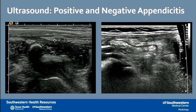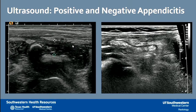Here are two examples of the appendix seen by ultrasound. The image on the left shows a dilated appendix measuring about one centimeter in diameter, with a curvilinear white appendicolith causing obstruction and peri-appendiceal inflammation — a slam-dunk diagnosis of acute appendicitis. The image on the right also shows the appendix as a blind-ending structure, but measuring only four millimeters in diameter, which is normal, so the patient's pain is not from appendicitis.